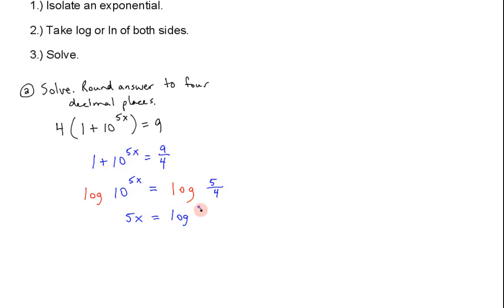And over here, you have log of 5 fourths. And finally, divide both sides by 5. So, you have log of 5 fourths divided by 5. So, x is approximately 0.0194.